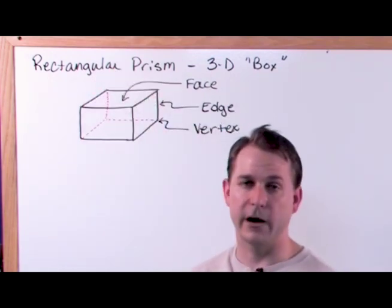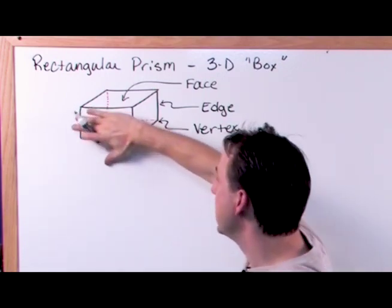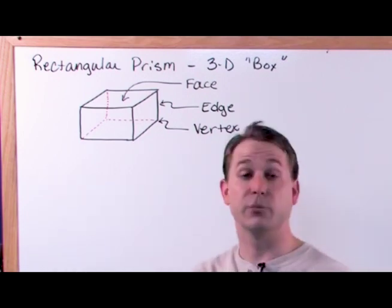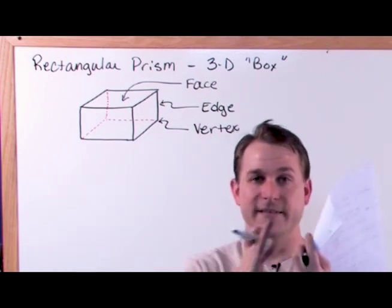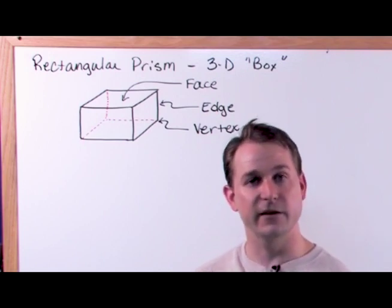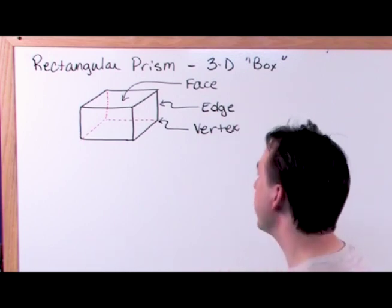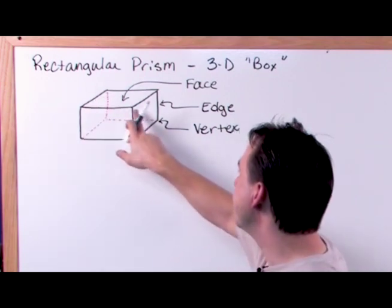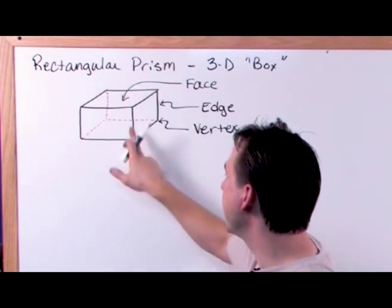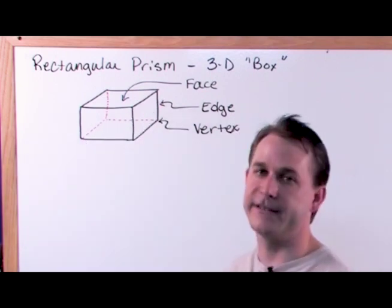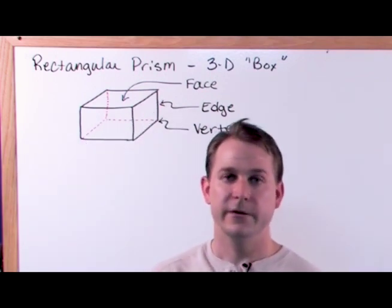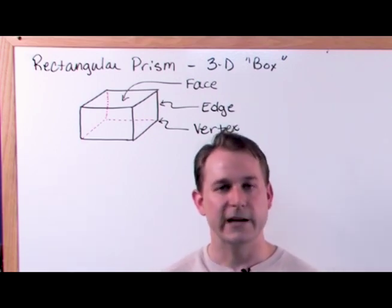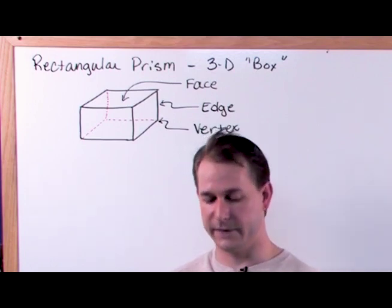That kind of tells you how we're going to tackle it. We're going to find the area of this face, this face, this face, the top, the bottom, the sides, and we're going to add them all up. We'll have six faces, so we add up six little surface areas — that's the total area of this rectangular prism. Notice the nice thing is that all of the faces are rectangles, and we already know how to calculate the area of a rectangle: it's just the base times the height.